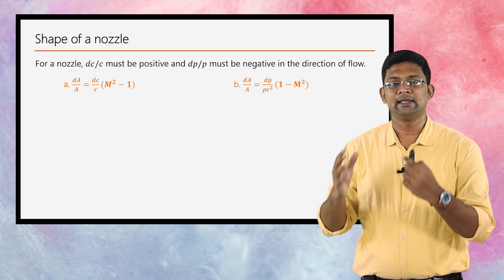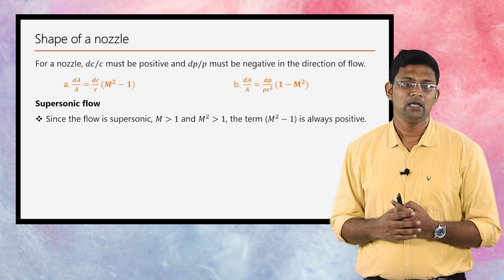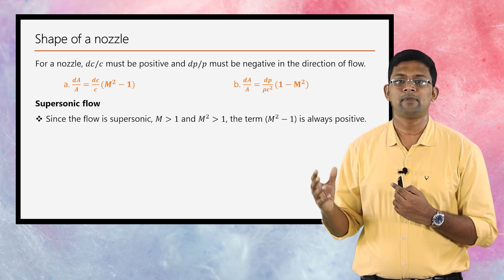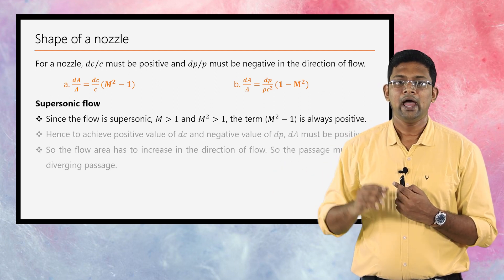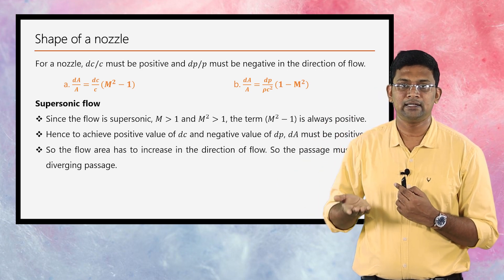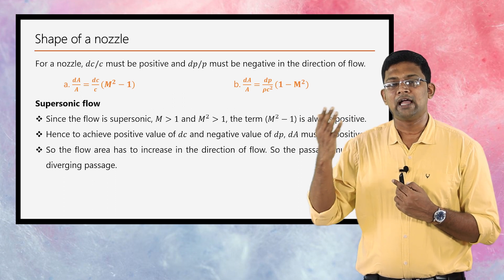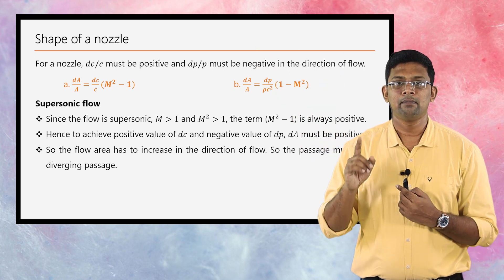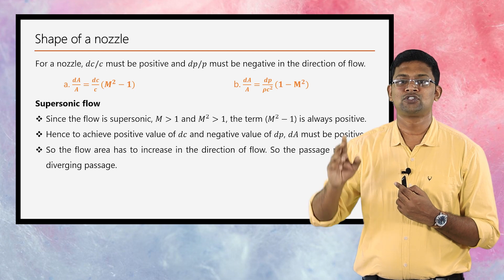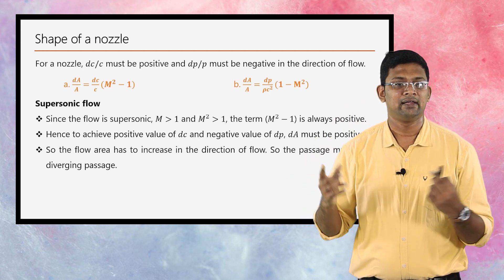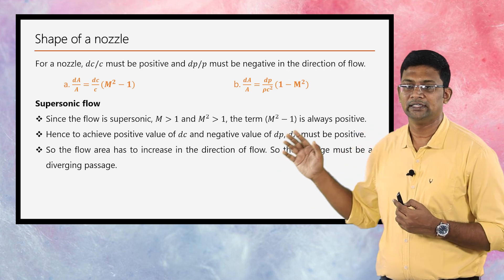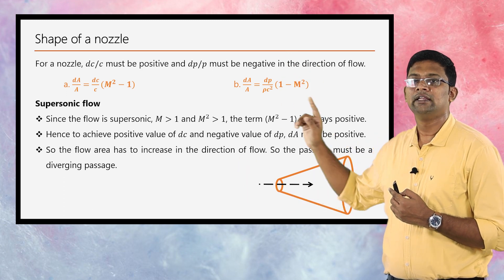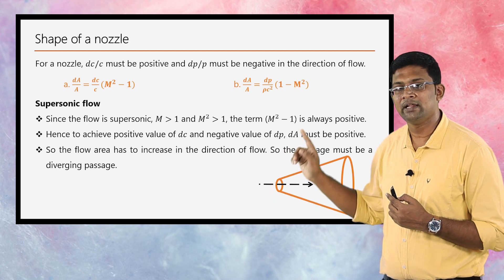For a nozzle in supersonic flow (M > 1), M² > 1 so (M² − 1) is always positive. To achieve positive dC and negative dP, dA must be positive — so the flow area has to increase and the passage must be diverging. This is very important: even though it is a nozzle, for a supersonic inlet the passage will be of diverging cross-section. In sonic flow (M = 1), both equations require dA = 0, meaning the area must be at its minimum where the Mach number reaches unity.